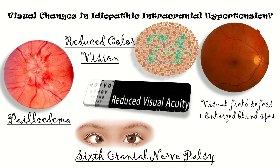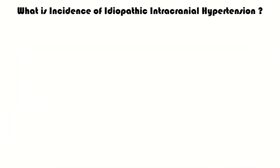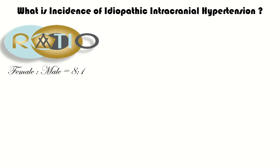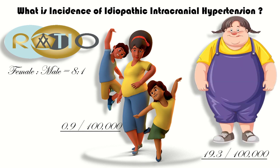Idiopathic intracranial hypertension has a female to male ratio of 8:1. Its incidence in women of childbearing age is about 4.9 per 100,000, which increases to 19.3 per 100,000 in obese women.